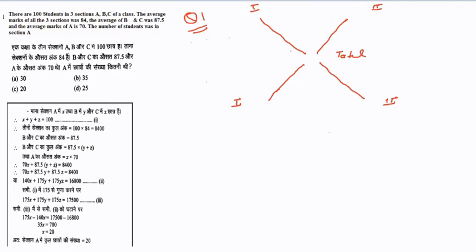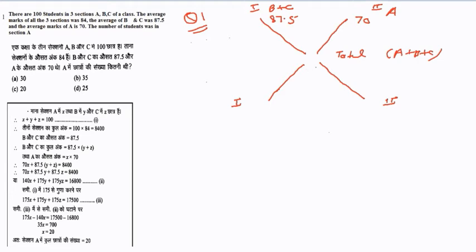Here, the whole is divided between two groups: Section B plus C, and Section A, making the total Section A plus B plus C. The average of Section B plus C is given as 87.5, the average of Section A is 70, and the total average is 84.